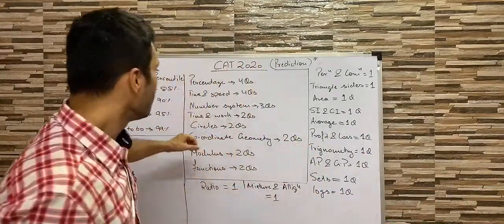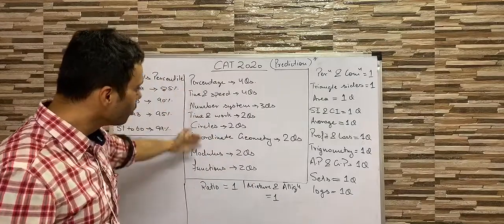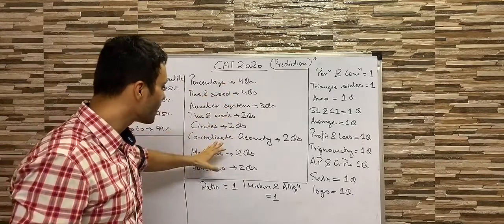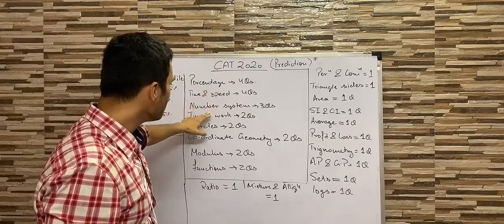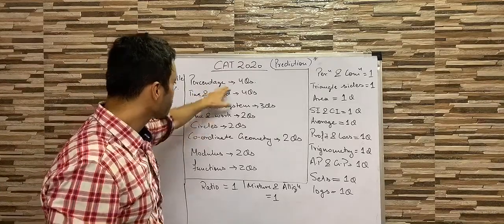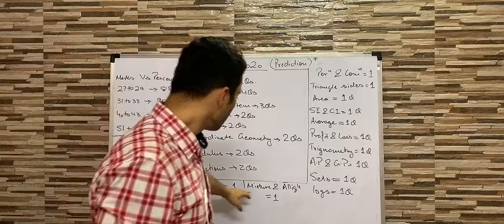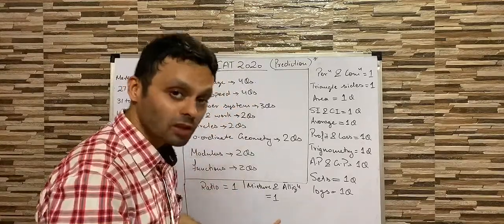Now, moving on, let's say if I am good in few topics, I will see how many questions are there. Let me take a few examples. For example, percentage, time and speed, and let me take time and work. So 10 questions here. Mixture and allegation, ratio, proportion. I'm just giving you an example, 12 questions there.